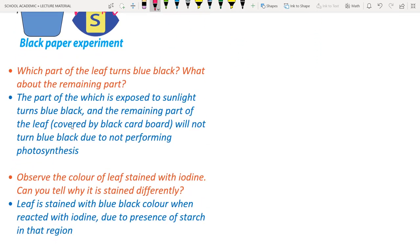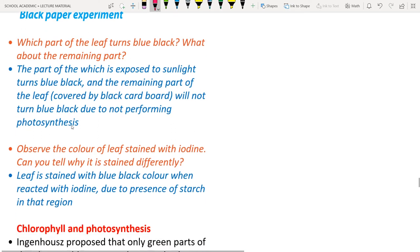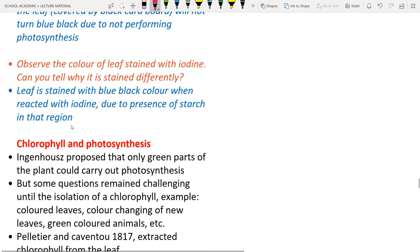This is known as the black paper experiment. The area of the leaf exposed to sunlight shows blue-black color; the covered part does not. The leaf is stained blue-black by iodine only where starch is present due to photosynthesis.